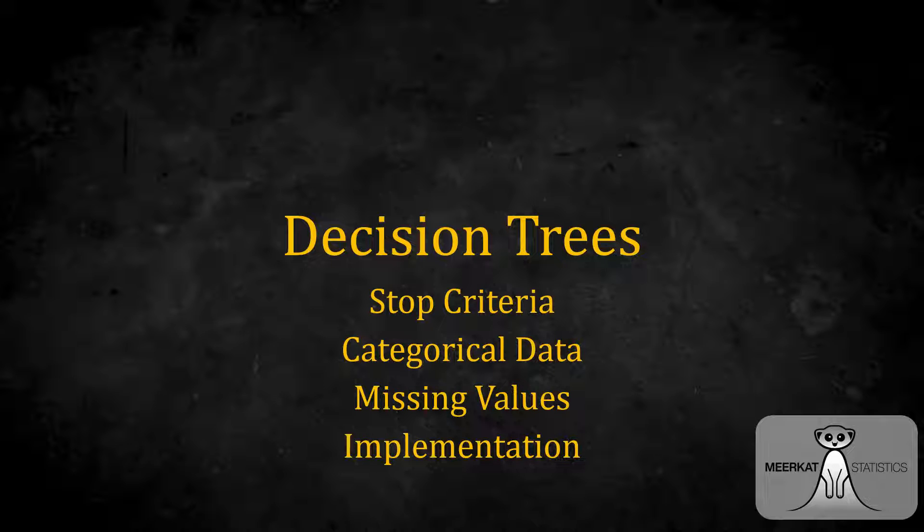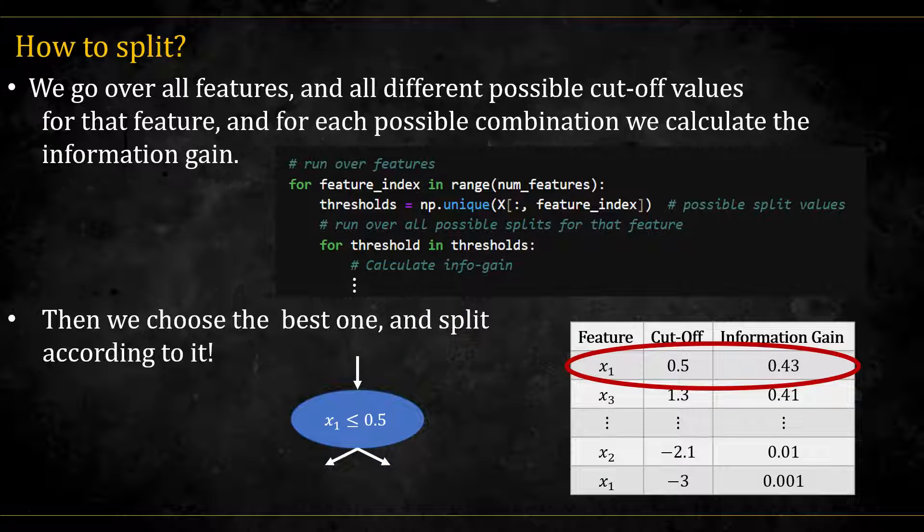We continue our journey into decision trees. In this video, we will talk about when to stop splitting, how to handle categorical data and missing values, and give implementation details. We finished the last video talking about how we choose the best split. We measure the information gain for each possible split and then choose the best split, that is the split with the most information gain, and we do the actual split there.